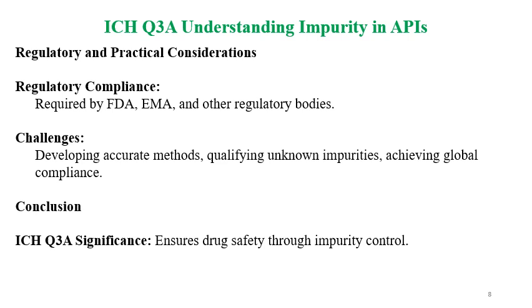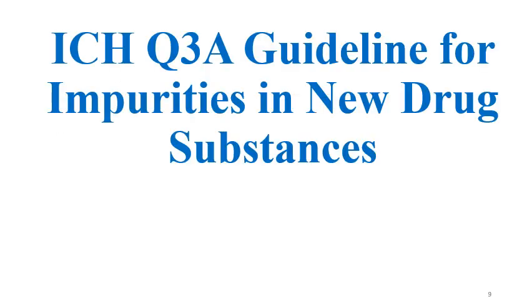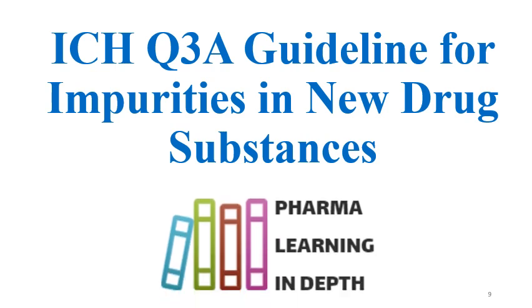Regarding regulatory and practical considerations: regulatory compliance is required by the FDA, EMA, and other regulatory bodies. Challenges include developing accurate methods, qualifying unknown impurities, and achieving global compliance. In conclusion, ICH Q3 guidelines ensure drug safety through the control of impurities. This has been a brief overview of ICH Q3A; upcoming videos will cover other guidelines. Many videos are available on impurities, impurity calculations, and related topics, so reviewing those is recommended for a good understanding.